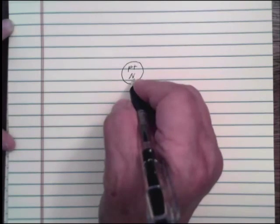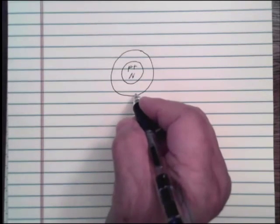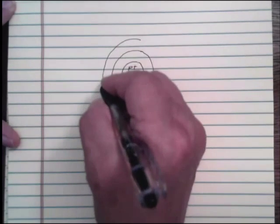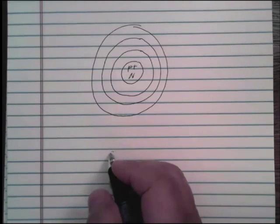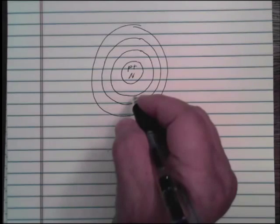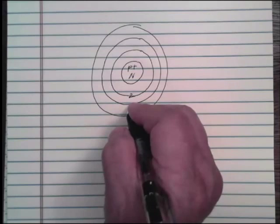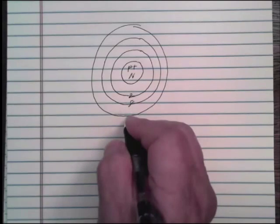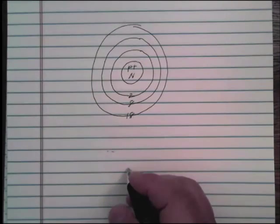We're going to start with a very basic, generalized model of an atom. Our atom has a nucleus containing protons with positive charge and neutrons. Orbiting at some distance are electrons. I'm going to draw three electron energy levels: the first energy level, the second energy level, and the third energy level. Each level represents a different number of electrons — the first shell can contain two electrons, the second can contain eight, and the third can hold eighteen.